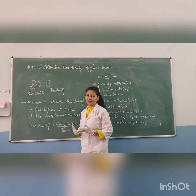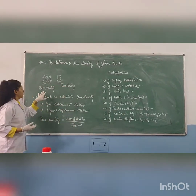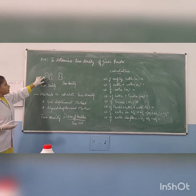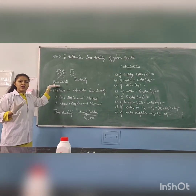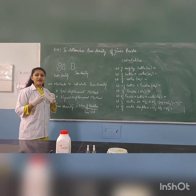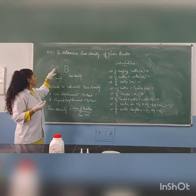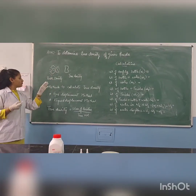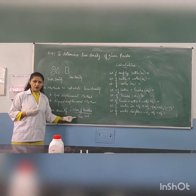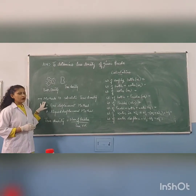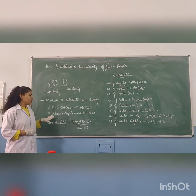Before moving towards the practical, we must understand what true density means. If we take powders along with the void spaces, then it is called bulk density. But in true density, we take the actual true volume of the powders alone — we will not take the void spaces along with the powder. The formula to determine the true density is mass of the powder over its true volume.